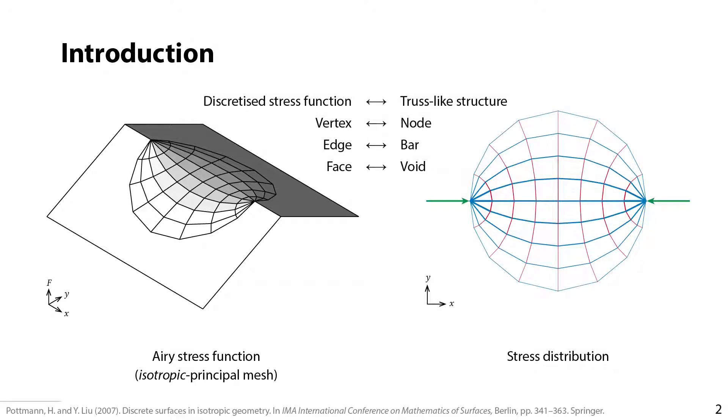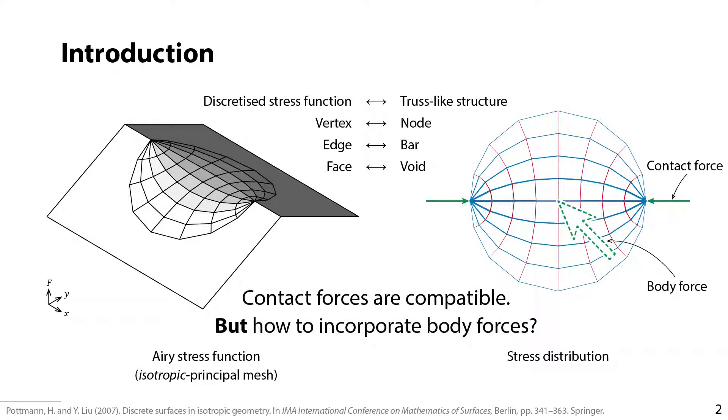Once a smooth Airy stress function is discretized, a continuous material is also discretized into a truss-like structure. A vertex on the polyhedral surface is a node of the truss. An edge is a bar, a face is a void. This discretization can work for any 2D structure subject to contact forces, such as the green compression that is applied at the boundary of the domain. But it is still unknown how to incorporate body forces, which are forces that directly apply to the element within the boundary.